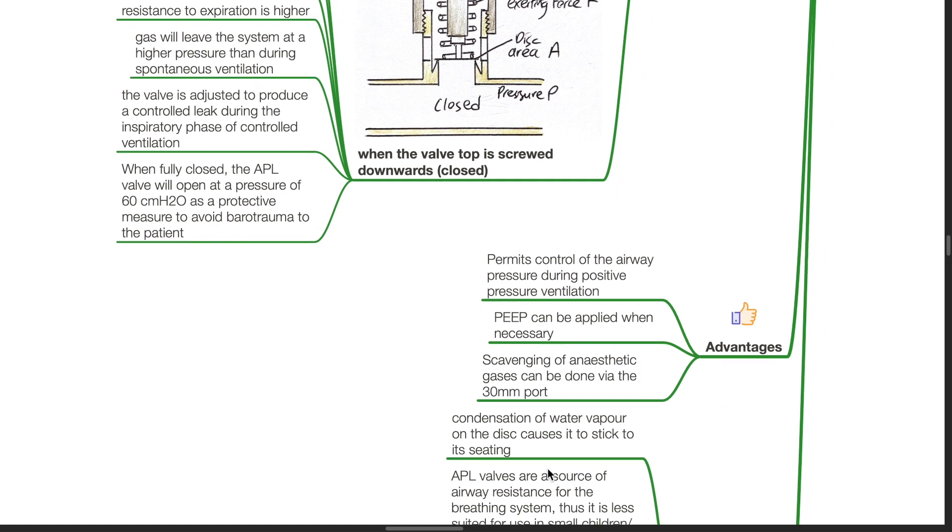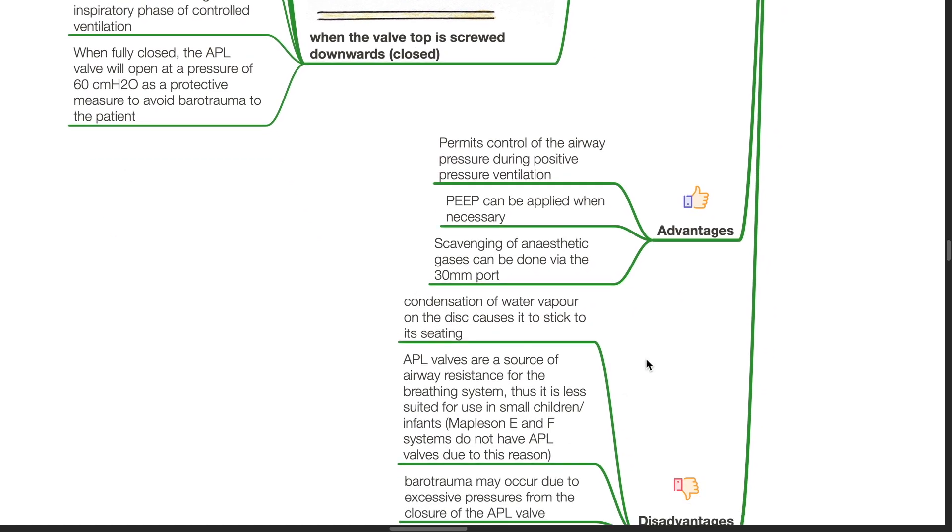Advantages of the APL valve. It permits control of the airway pressure during positive pressure ventilation. PEEP can be applied when necessary. Scavenging of anesthetic gases can be done via a 30mm port.